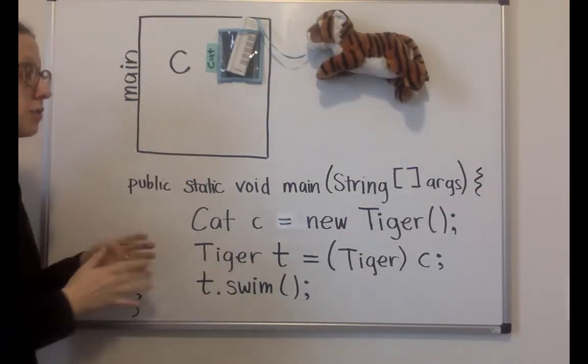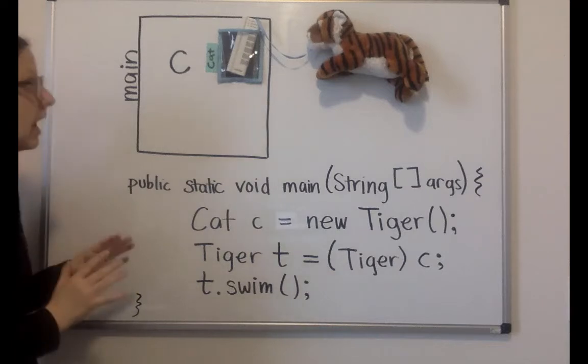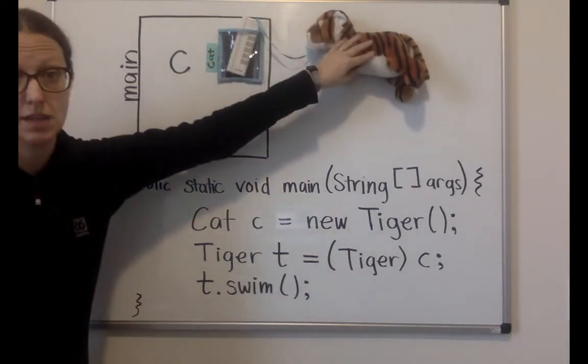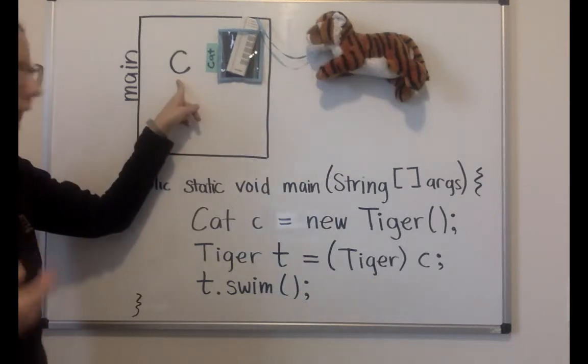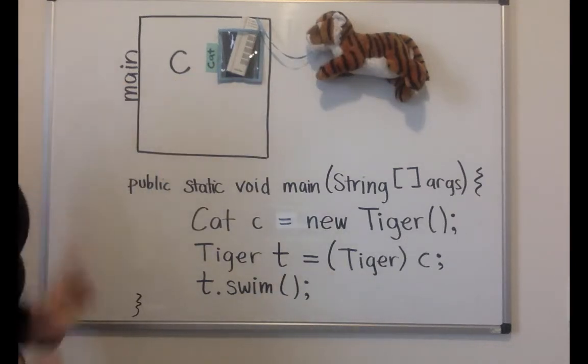The key problem is that I want to call the swim method on the Tiger object, but I only have a Cat variable. You're thinking this is a little bit contrived. That's fair, but this is a general principle where I want to use this to introduce casting.